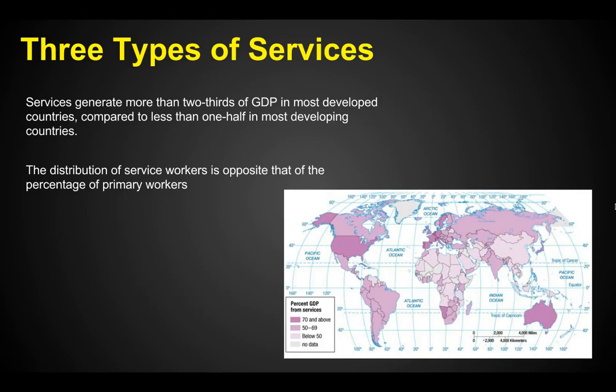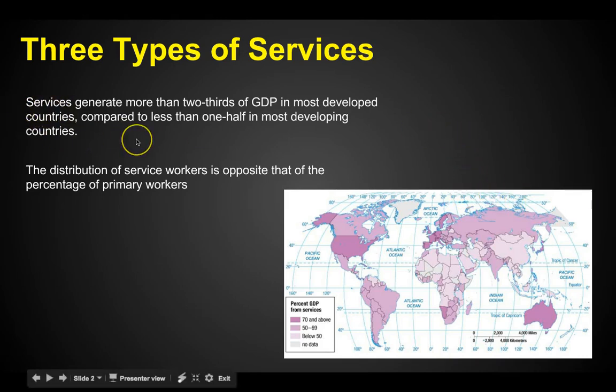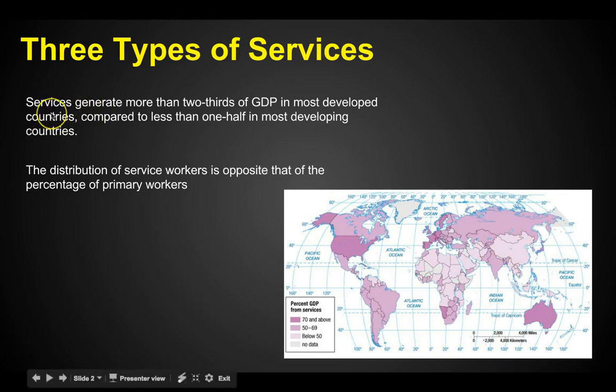There are three types of services. When we're talking about services, these are the things that you create for customers. Services generate more than two-thirds of the GDP — the gross domestic product — in most developed countries, compared to less than one-half in most developing countries. In developed countries, people are doing things like accounting, legal, and back office duties, rather than manufacturing or farming. In developing countries, they're still getting money from farming and manufacturing.